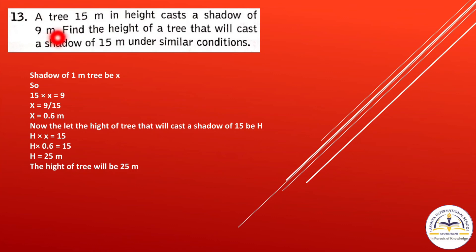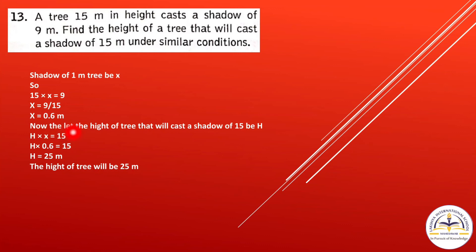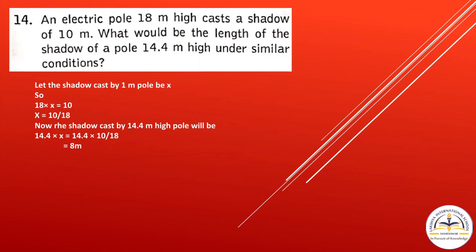Question 13: A tree 15 meters in height casts a shadow of 9 meters. Find the height of a tree that will cast a shadow of 15 meters under similar conditions. The shadow per meter of height: 15 times x equals 9, so x equals 0.6. Let h be the required height, then h times 0.6 equals 15, giving h equals 25 meters.